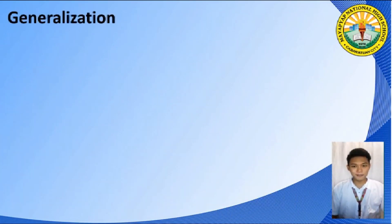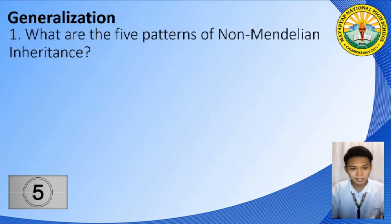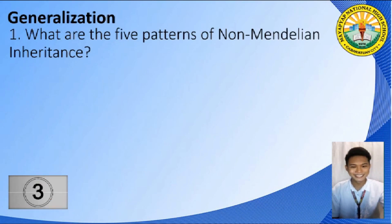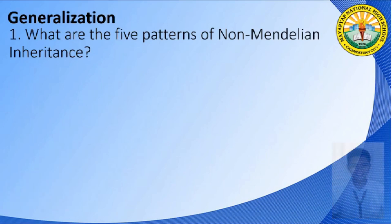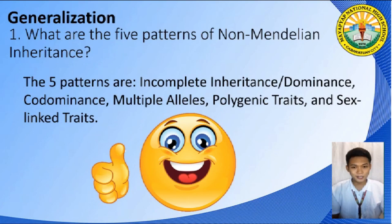To check if you have learned something from this video tutorial, let us answer some questions that will generalize our topic. First question: What are the five patterns of non-Mendelian inheritance? Your answer is correct! The five patterns of non-Mendelian inheritance are Incomplete Inheritance, Co-Dominance, Multiple Alleles, Polygenic Traits, and Sex-Linked Traits.